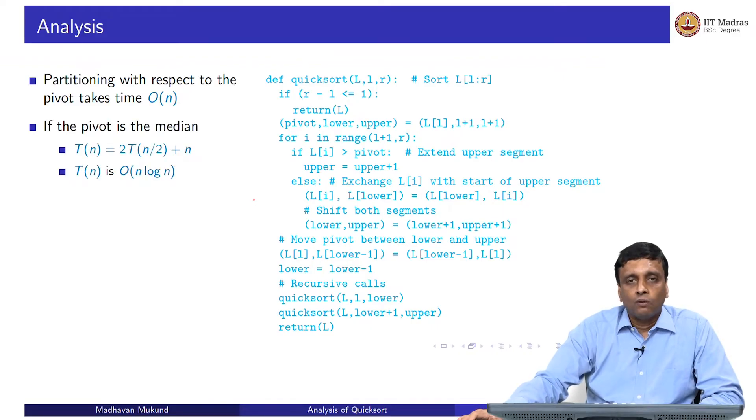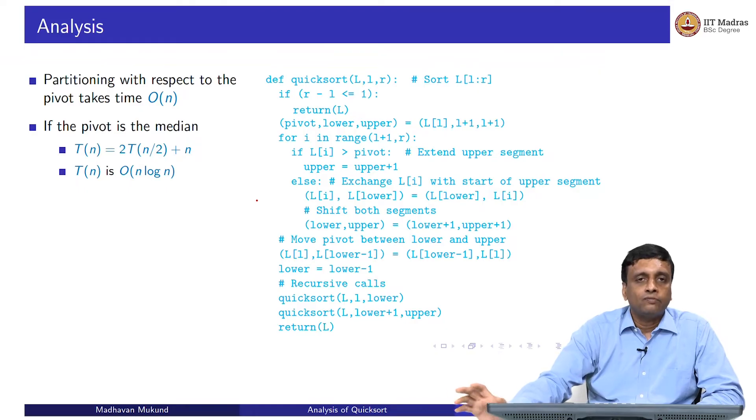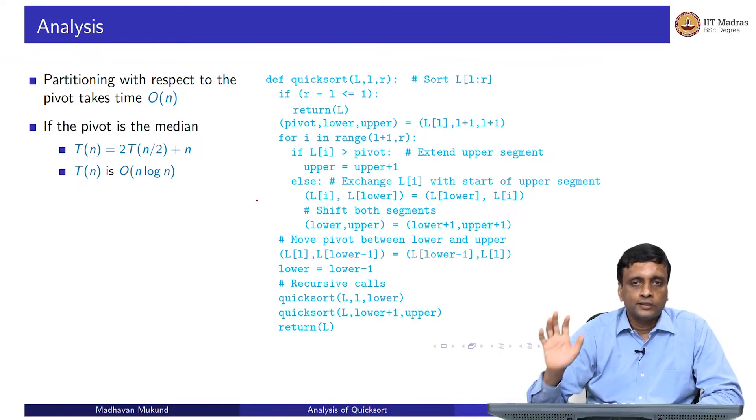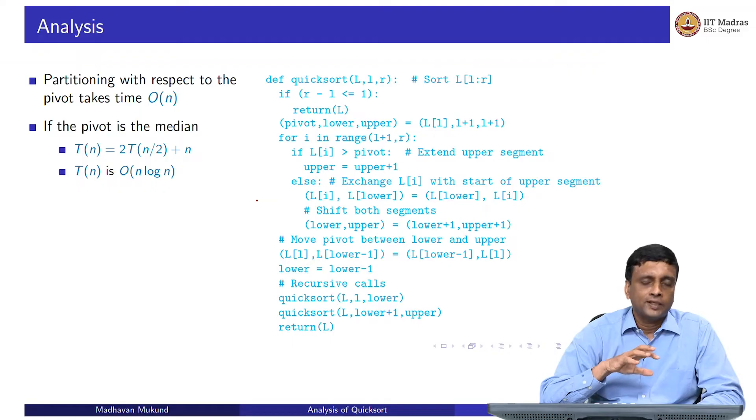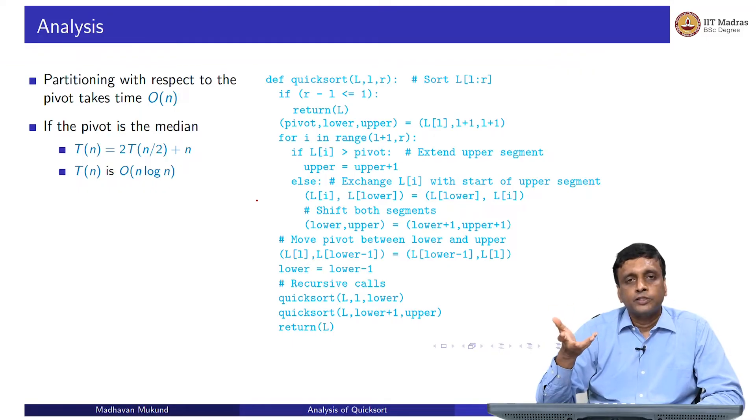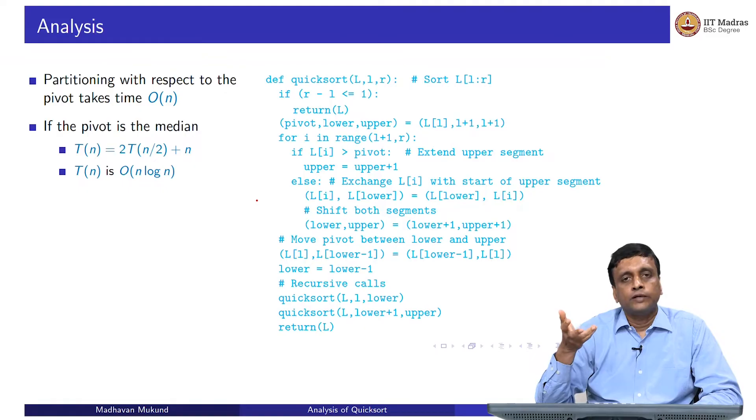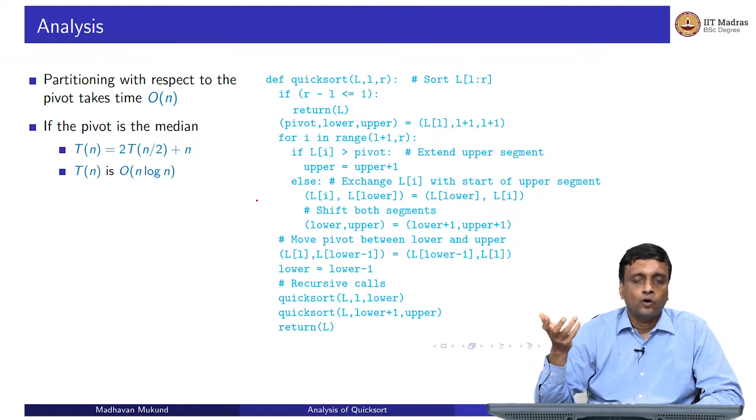But the real question is, what are we partitioning with respect to? If the pivot is actually the median, then the two halves are roughly equal in size. The lower half has half the elements, the upper half has half the elements. We get our familiar merge sort recurrence: T(n) is 2 times T(n/2) plus the partitioning cost of n, giving us an n log n algorithm.